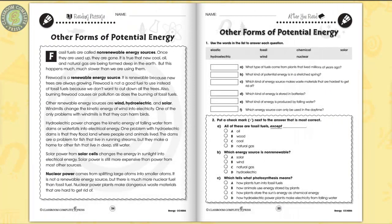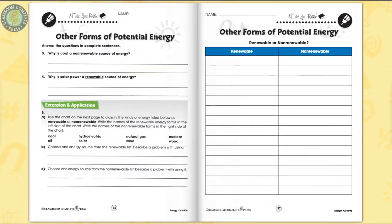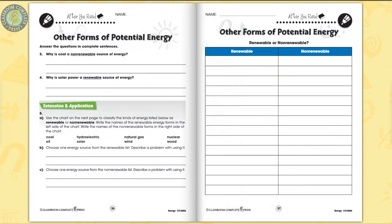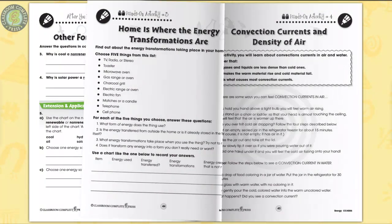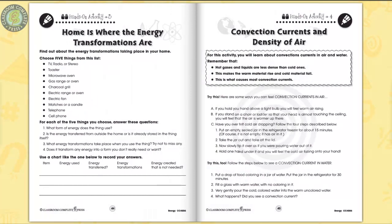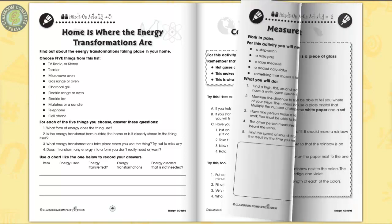Take a look at the electromagnetic spectrum as you see all the colors of light energy. Explore other forms of potential energy from non-renewable and renewable sources. The hands-on activities are designed to get your students thinking and elaborating on everything they have learned so far.